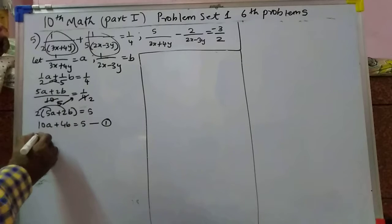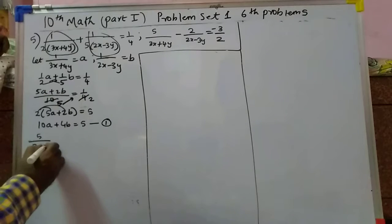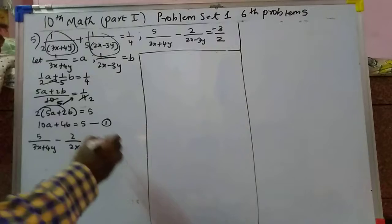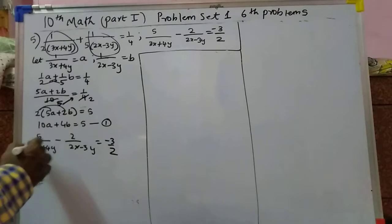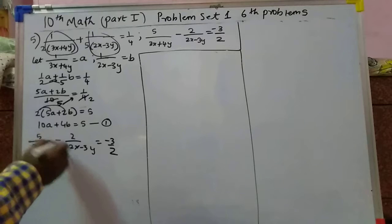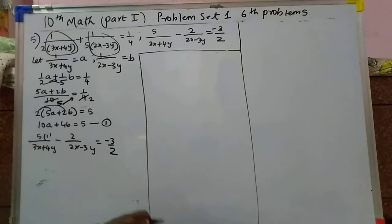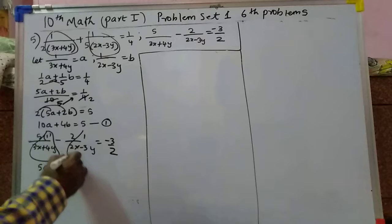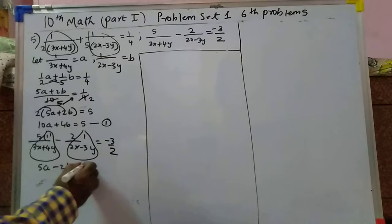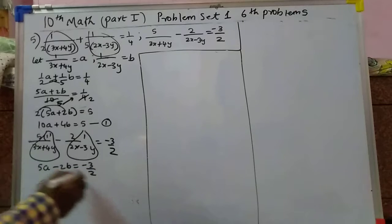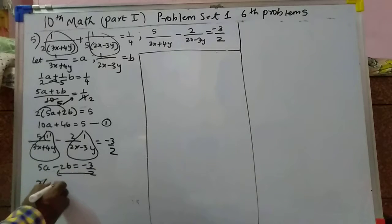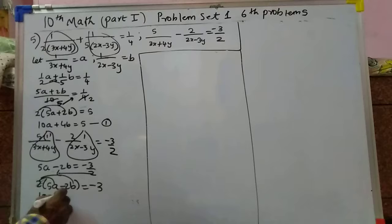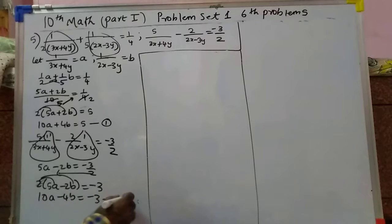The second equation: 5 upon 3x plus 4y minus 2 upon 2x minus 3y equals minus 3 by 2. Substituting a and b: 5a minus 2b equals minus 3 by 2. Cross-multiplying by 2: 2 into 5a minus 2b equals minus 3, giving 10a minus 4b equals minus 3, equation 2.